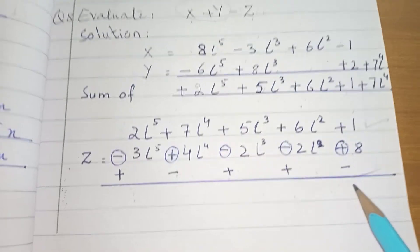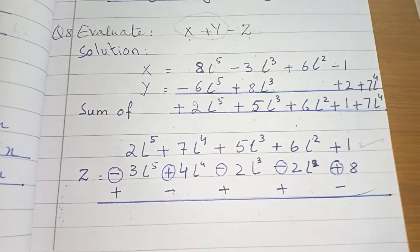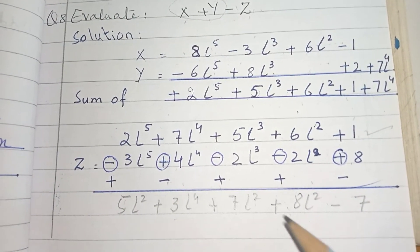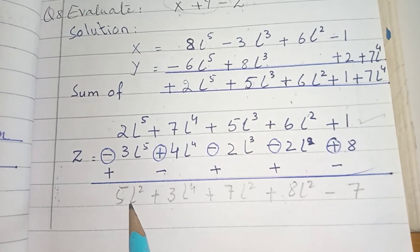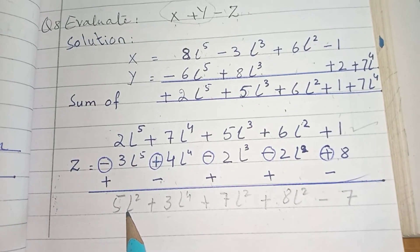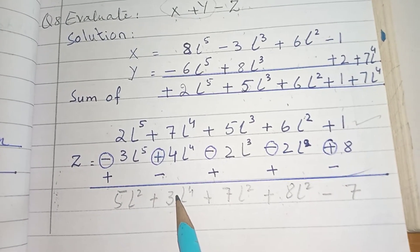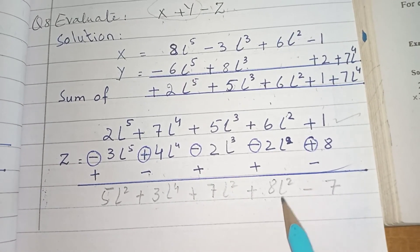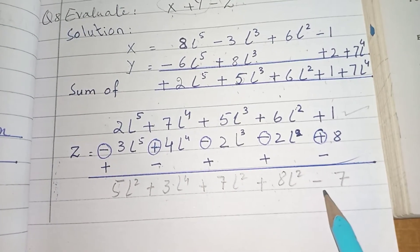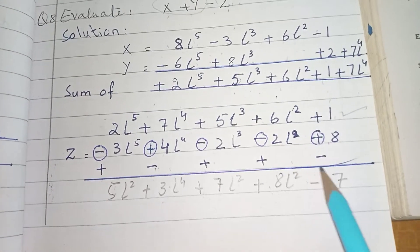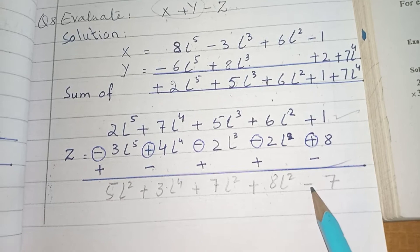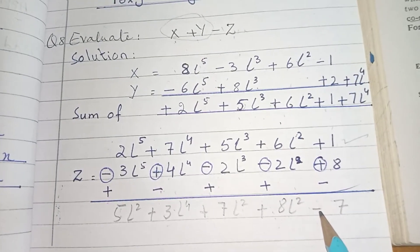Question number 8, done. 5L power 4 with plus sign, plus 3L power 4 with plus sign, plus 7L square, plus 8L square, minus 7. We put the minus sign. 8 is a bigger number, that's why we put the minus sign. 8th one done.